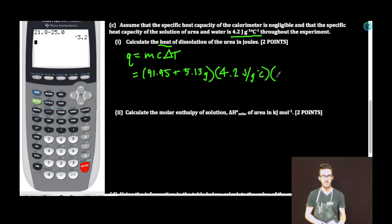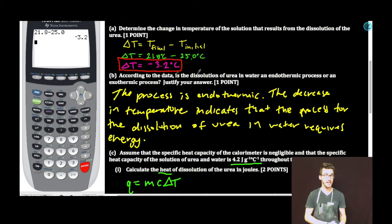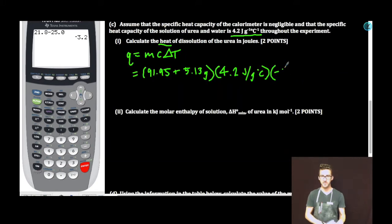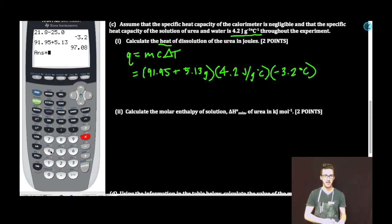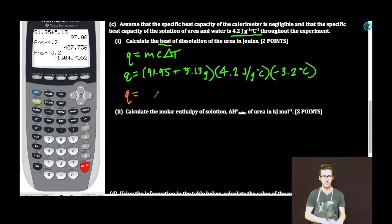Times our temperature change, which we already calculated in Part A: negative 3.2 degrees Celsius. Using the calculator: 91.95 plus 5.13, times 4.2, times negative 3.2. To two sig figs, we've got negative 1300 joules.